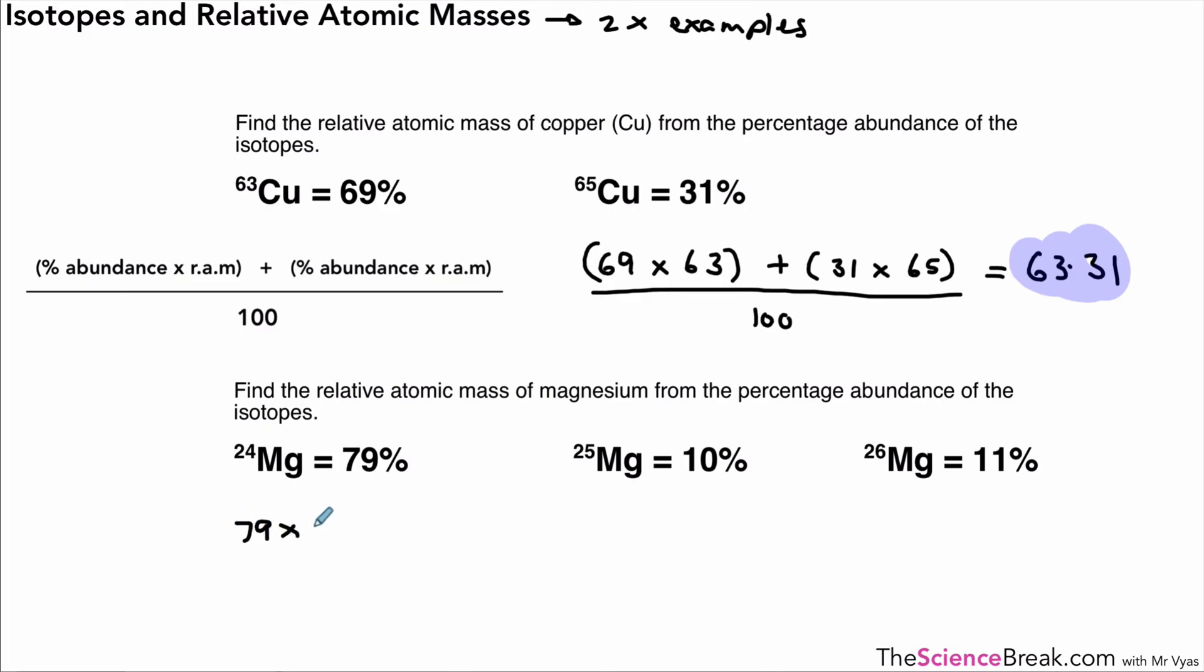Magnesium looks trickier because there are three isotopes, but the method is the same—you just have an extra set of brackets: (79 × 24) + (10 × 25) + (11 × 26). Work out those values, add them together, divide by 100, and we get 24.32. This is the relative atomic mass based on the data. In your periodic table, it's rounded to 24, which is adequate for calculations.